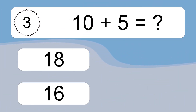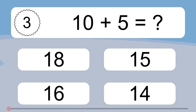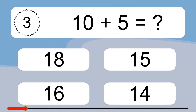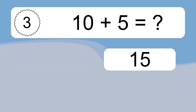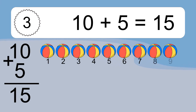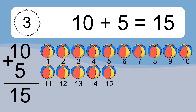10 plus 5 equals what? 10 plus 5 equals 15. Let's count it: 1, 2, 3, 4, 5, 6, 7, 8, 9, 10, 11, 12, 13, 14, 15.